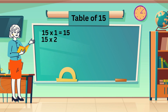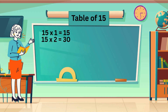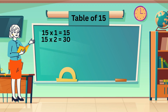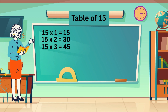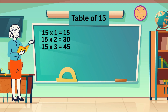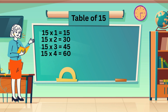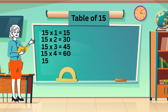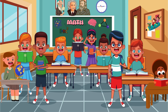Table of 15. 15 ones are 15. 15 twos are 30. 15 threes are 45. 15 fours are 60. 15 fives are 75.